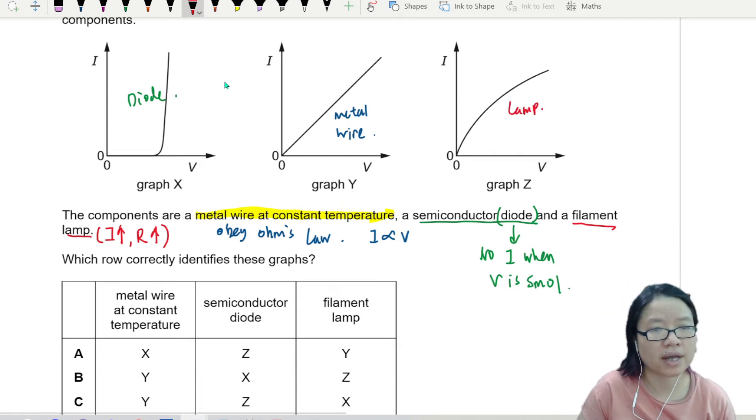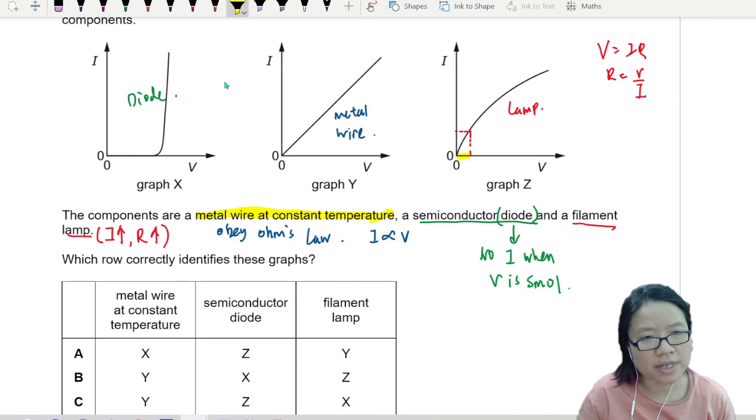Because we can look at this point here. V is equal to IR. So R is V over I. So in the first R, I will take this distance divided by this distance.